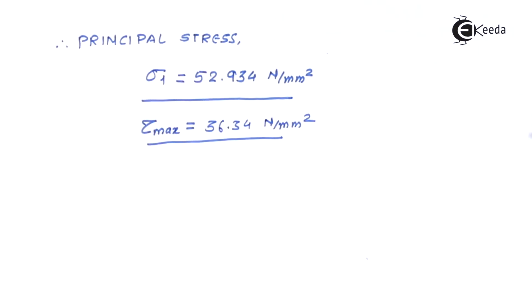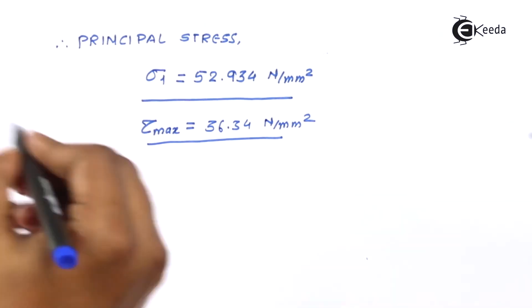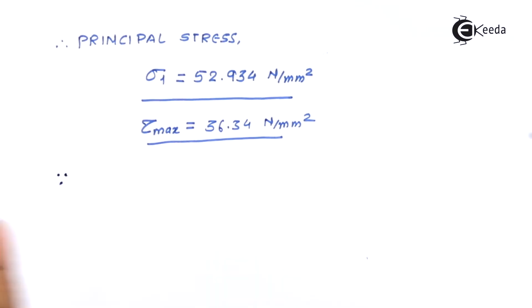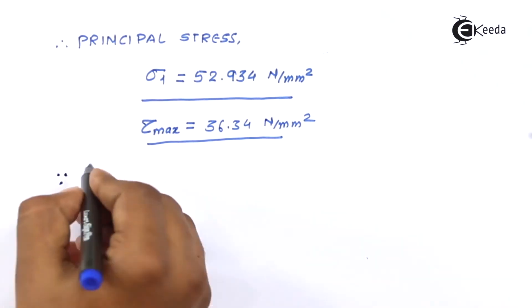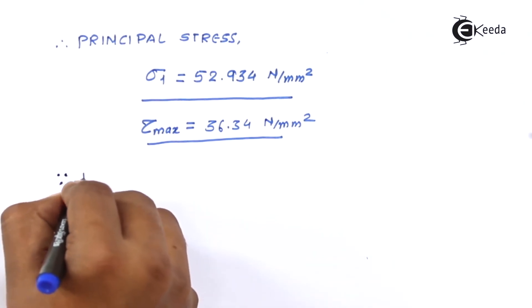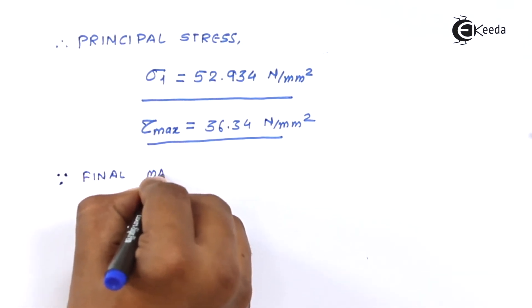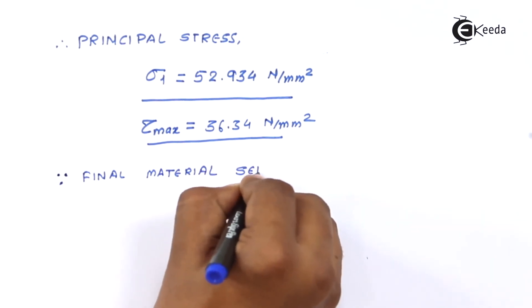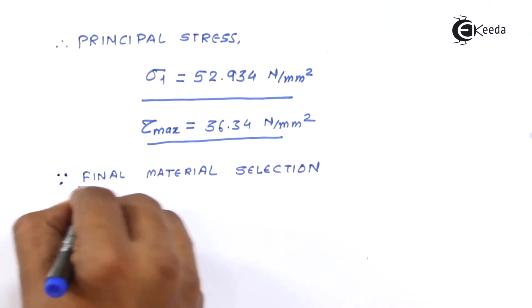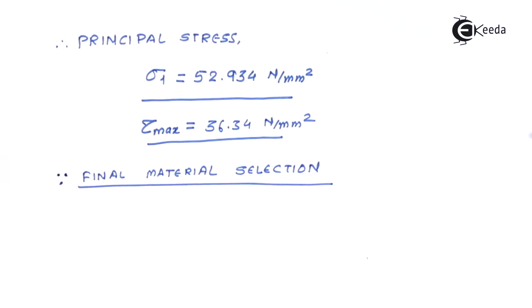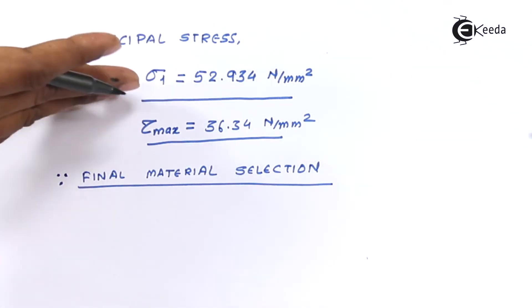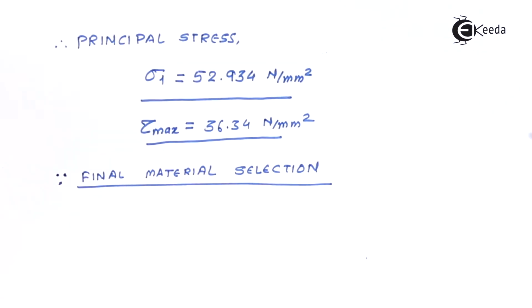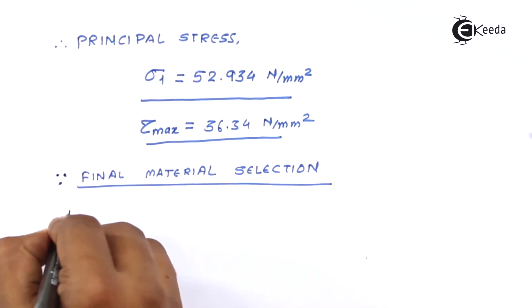We now cross-verify these values with allowable values — or equivalently, we select the material based on these induced stresses. We have mentioned that the screw can use a kind of steel and the nut can use cast iron, but we have not specifically selected grades yet. There are two ways: use known material properties and prove they are safe, or derive the required properties from the induced stresses.